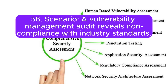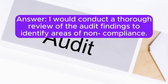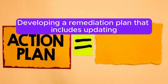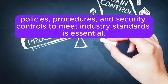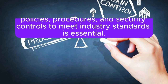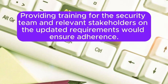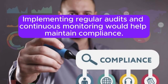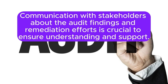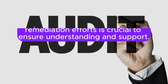Scenario 56: A vulnerability management audit reveals non-compliance with industry standards. How do you address this? I would conduct a thorough review of the audit findings to identify areas of non-compliance. Developing a remediation plan that includes updating policies, procedures, and security controls to meet industry standards is essential. Providing training for the security team and relevant stakeholders on the updated requirements would ensure adherence. Implementing regular audits and continuous monitoring would help maintain compliance. Communication with stakeholders about the audit findings and remediation efforts is crucial to ensure understanding and support.